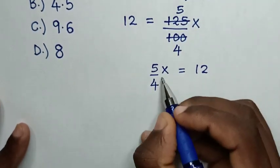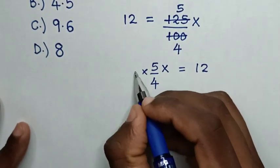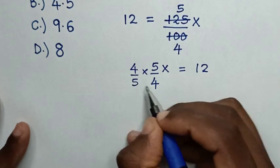Then, to find the value of x, we will multiply by 4 over 5 on both sides.